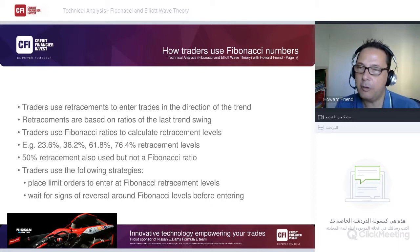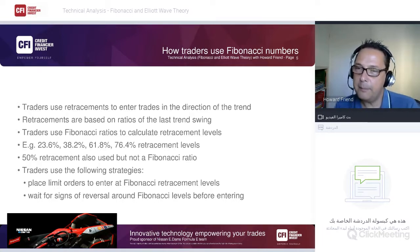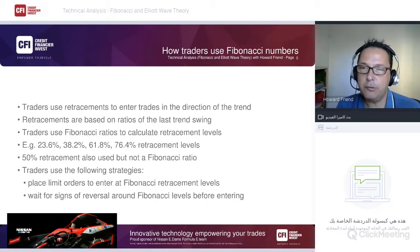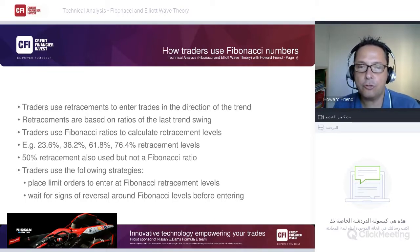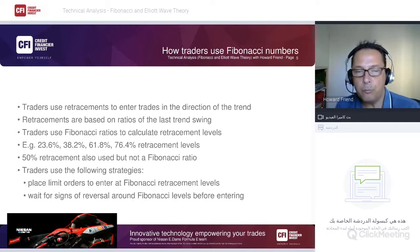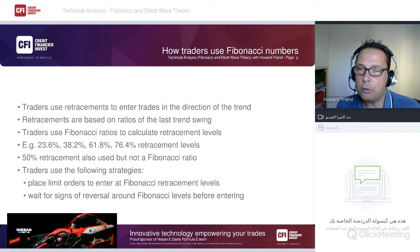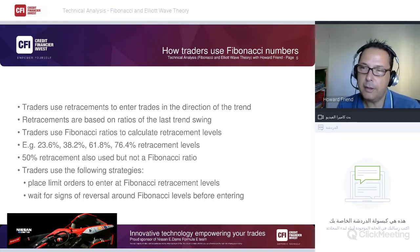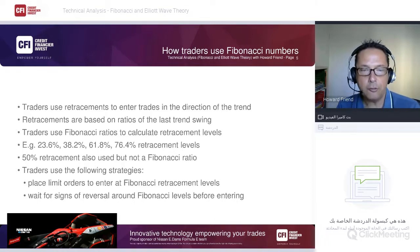The 50% retracement is also commonly used, though it's not technically a Fibonacci ratio. Most computer charting packages allow you to identify a swing high and swing low and automatically draw these Fibonacci retracement levels. You draw from swing low to swing high when looking to buy a pullback.